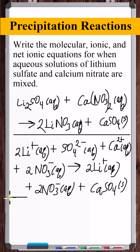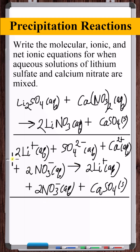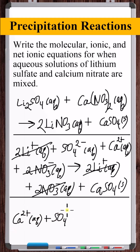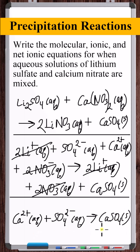To get the net ionic equation, we take the ionic equation and cancel any spectator ions. What's left after canceling is the net ionic equation.